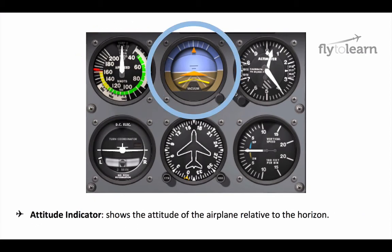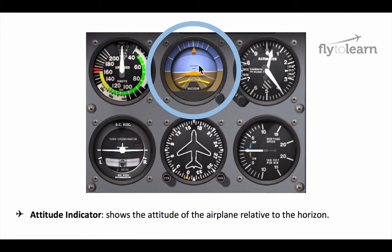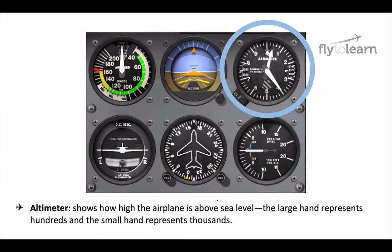The attitude indicator shows the attitude of the airplane relative to the horizon. As you tip the nose of your aircraft up, this instrument will read more blue, and as you tip down, more brown. Your altimeter shows how high your airplane is above sea level. The large hand represents hundreds, and the small hand represents thousands.